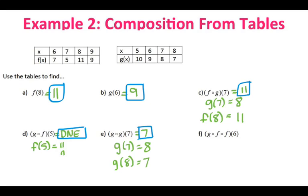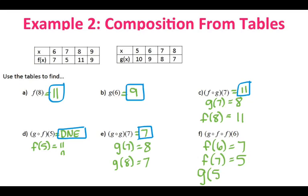Last one — it is a triple composition. We start with f of 6. Looking at my table, f of 6 is 7, since my x is 6 and the y is 7. Now I am going to look at f of 7 — compositions take the output and put it into the next function. So f of 7 is 5. And then finally, I am looking at g of 5, which is 10. So g of f of f of 6 is 10. That covers all of the material for 2.4 Day 2, the composition. See you guys in class!